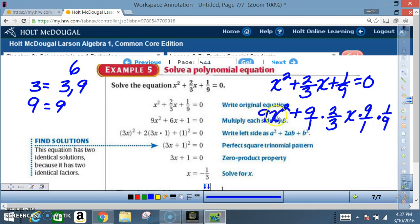And then one over nine gets multiplied by nine. Now, nine times nine x squared is going to give me nine x squared. Nine times two thirds is going to give me nine times two, which is 18, over one times three, which is three. And then 18 divided by three is six. And that's how they ended up with six x.